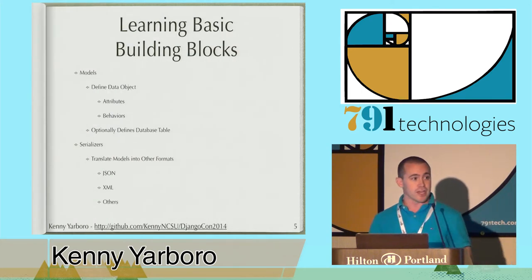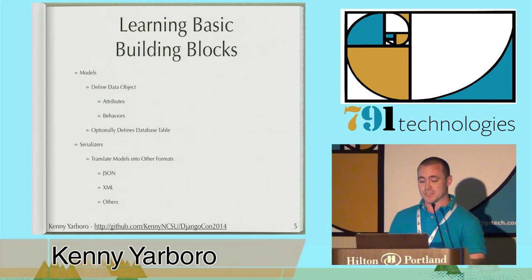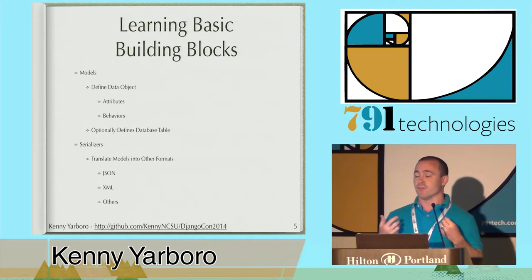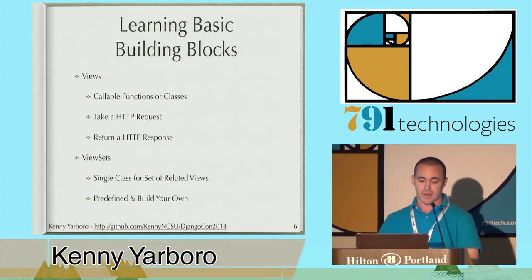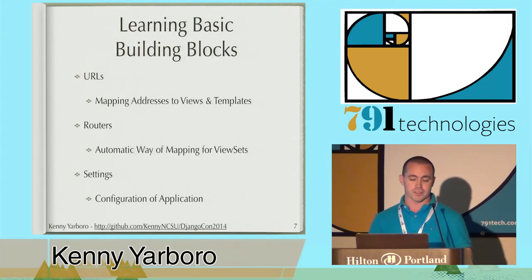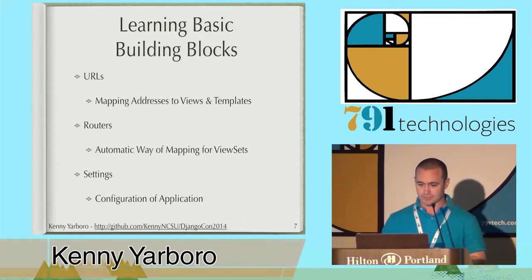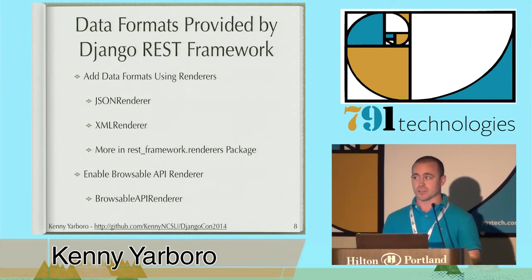In learning Django and Django REST Framework, you go through all the tutorials. You have your models — a way to define database tables. You have serializers; for our application we use JSON as our data format. For your views, you're taking in a request, doing something, and sending back a response. You have view sets, which can be collections of related views. You have URLs to map addresses to places, routers, and settings where you can configure the application. For data formats, there are different renderers available — we're using the JSON renderer, there's XML, and of course the Browsable API renderer, which is a big part of our project.